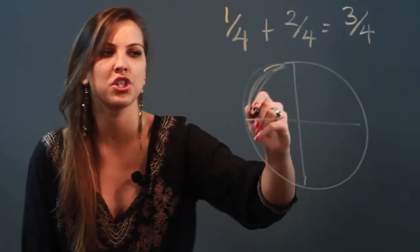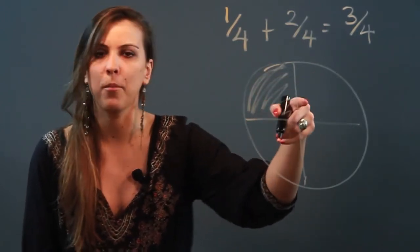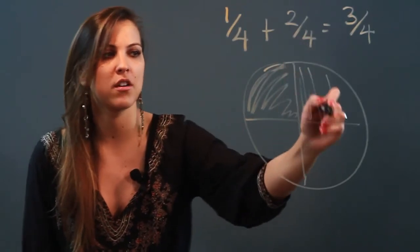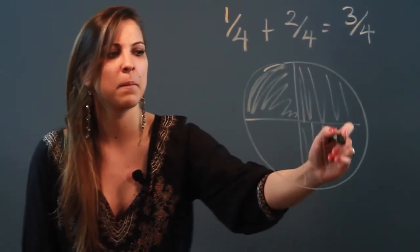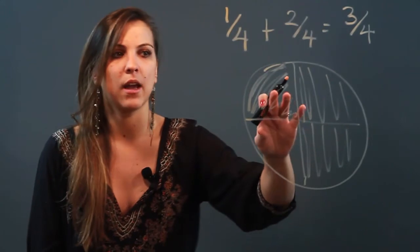...you're going to represent 1/4 by just shading in one of four parts plus 2/4 so I'm going to shade in another two parts of my circle. When I add these two I'm going to get one two three parts shaded...